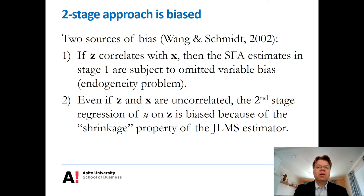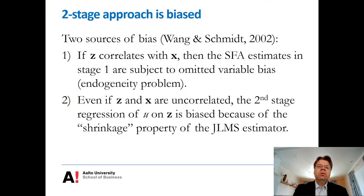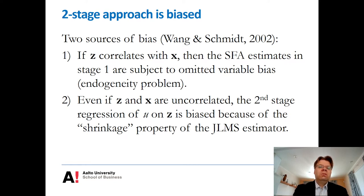This is one of the textbook examples of the endogeneity problem. If we have an endogenous regression in the first stage, then all the statistical properties basically fly out of the window. It would be better if the Z variables do not correlate with the inputs — in that special case, OLS in the first stage would be unbiased. However, because we use this SFA estimator, and particularly the JLMS estimator for the inefficiency term, that introduces another source of bias, which Wang and Schmidt call the shrinkage property of the JLMS estimator.